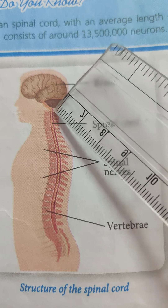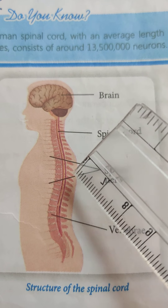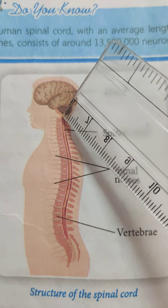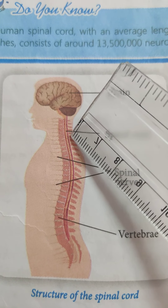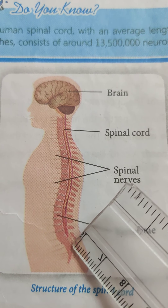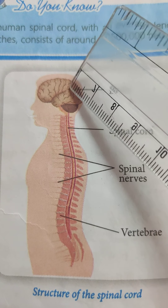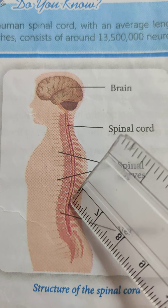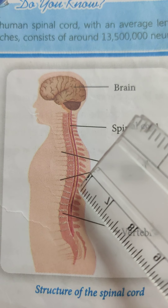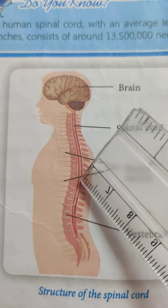Now we come to the spinal cord. The spinal cord is the extension of medulla oblongata. It is a cord-like nerve tissue which emerges from a hole at the bottom of the skull and runs downwards almost the entire length of the vertebral column or backbone. The spinal cord forms an important link between the brain and the rest of the body. Involuntary responses to outside stimuli which do not go to the brain are managed by the spinal cord alone. Such responses are called reflex actions.